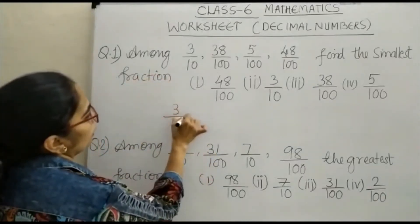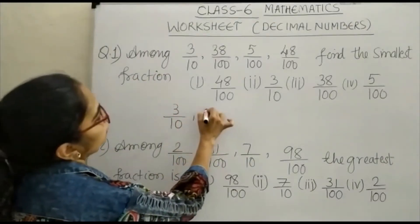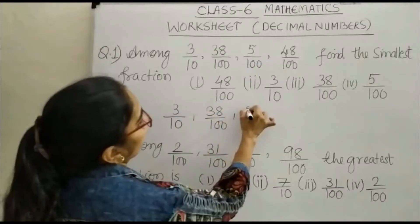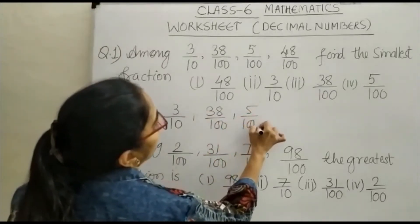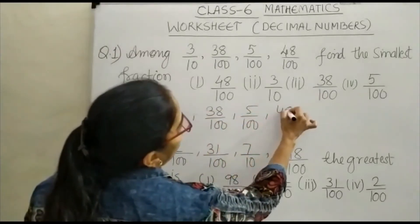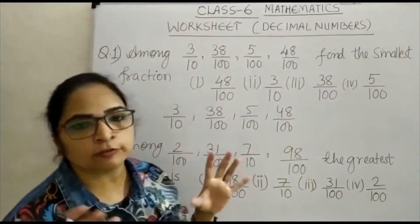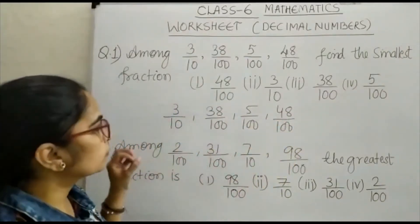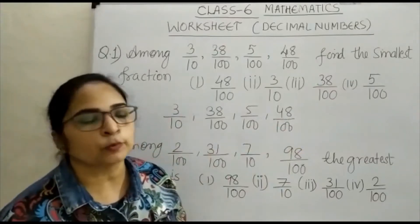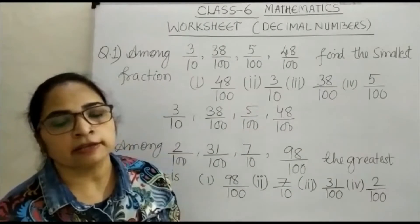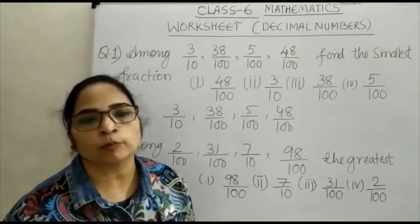given, you can see here, you have 3 upon 10 and 38 upon 100 and 5 upon 100 and 48 upon 100. In four fractions, you have to find the smallest fraction. First, you have to check that all of the denominators are the same or not. If the denominator is not the same, then you have